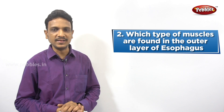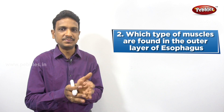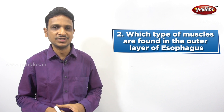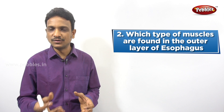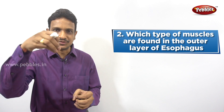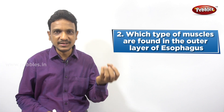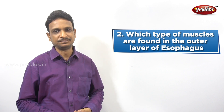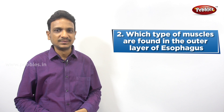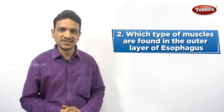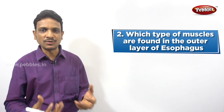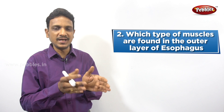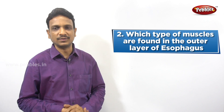Which type of muscles are found in the outer layer of the esophagus? The esophagus is the pipe that connects the mouth to the stomach, but it is not just a hollow pipe. The food we swallow does not pass down due to gravity — it will not directly fall into the stomach. The food passes through the esophagus by some rhythmic contractions and relaxations of the muscles in the esophagus.